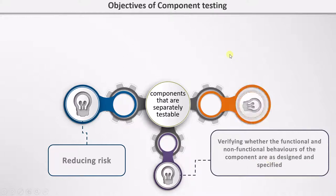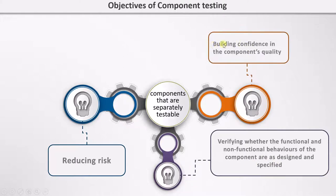The third objective of component testing is building confidence in the component's quality. Whenever we find a defect in the component, we reduce the risk as well as raise the confidence in the component's quality — that this component works as it should. And when it is integrated with other components, they will also work as intended.